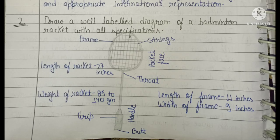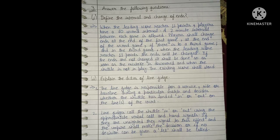Question two: draw a well-labeled diagram of a badminton court with its specifications, as shown in the diagram. Question three: define the interval and change of ends. When the leading score reaches 11 points, players have a 60-second interval. A two-minute interval between each game is allowed.